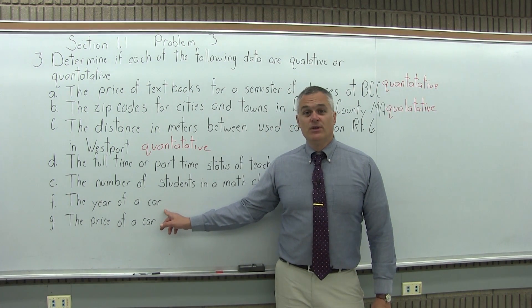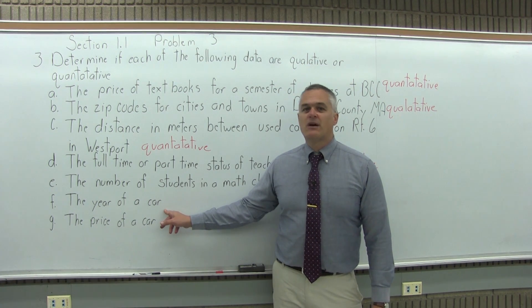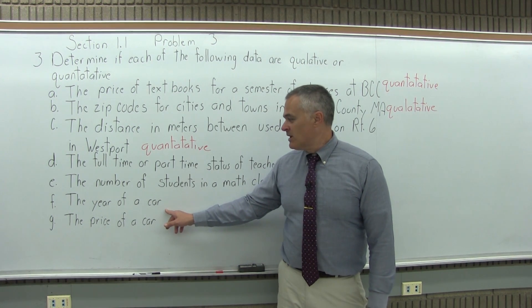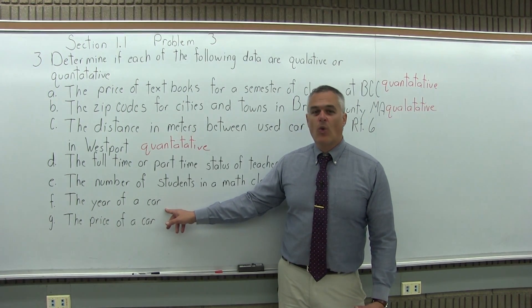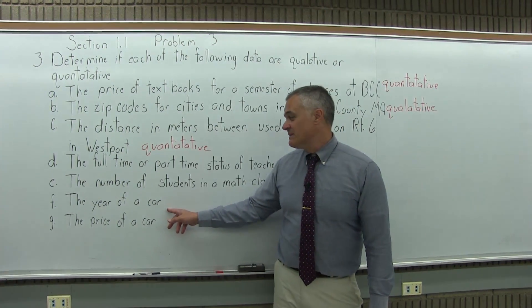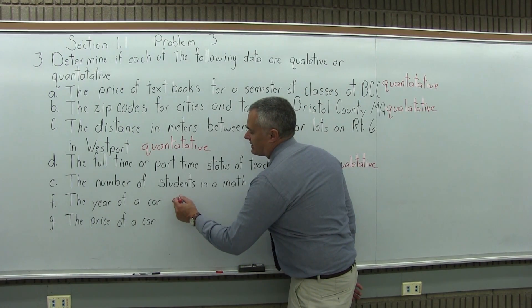F, the year of a car, say like a 2014 Toyota Camry maybe. It is a number, but it's not really measuring a quantity of when the car was made. It is a label. So F would be qualitative.